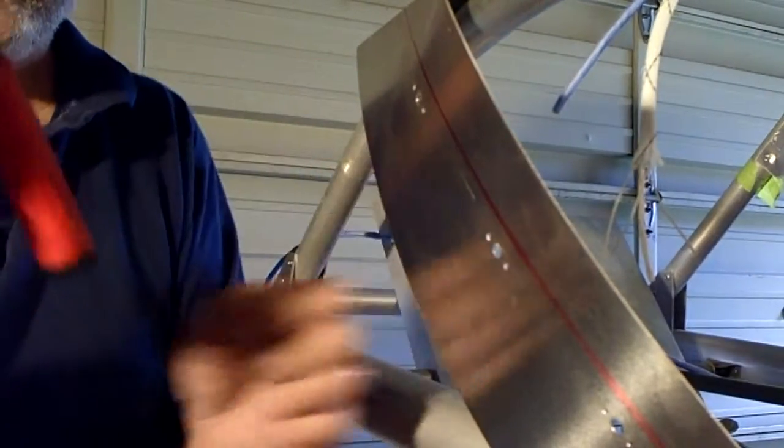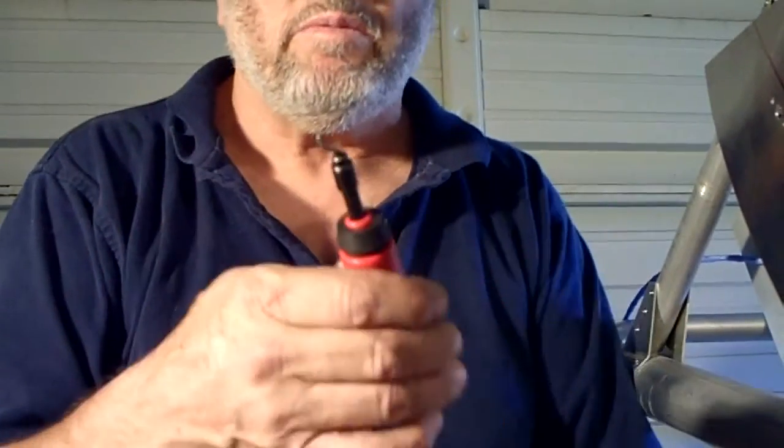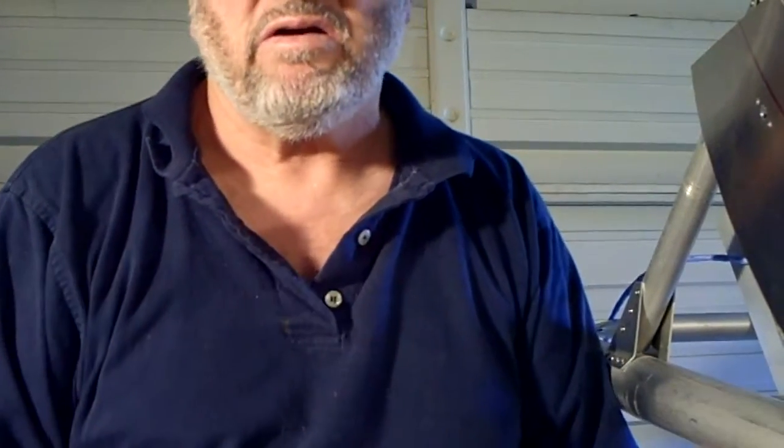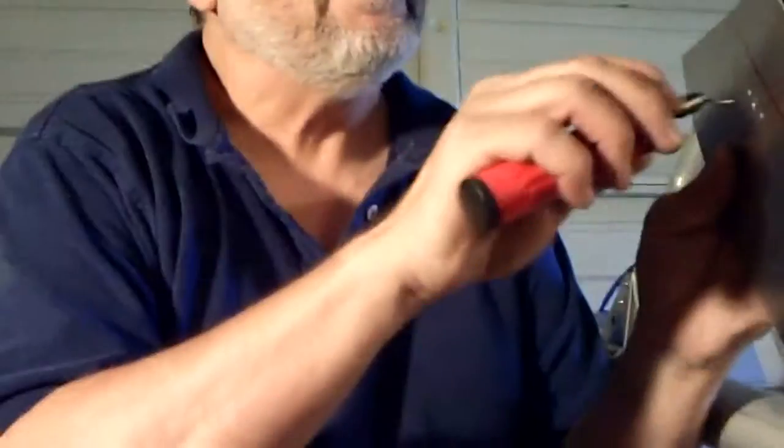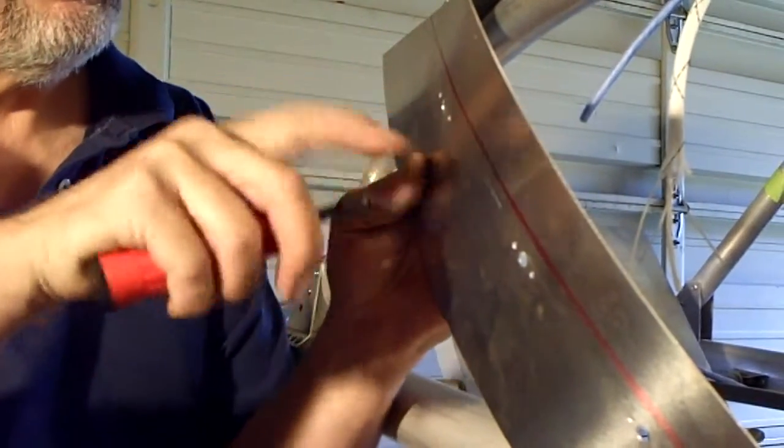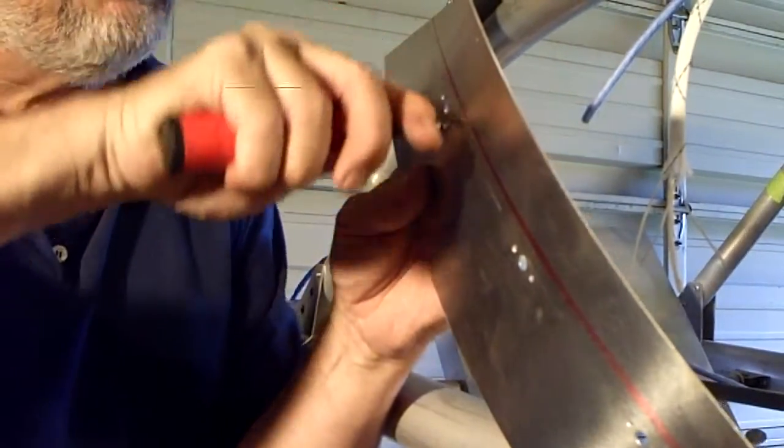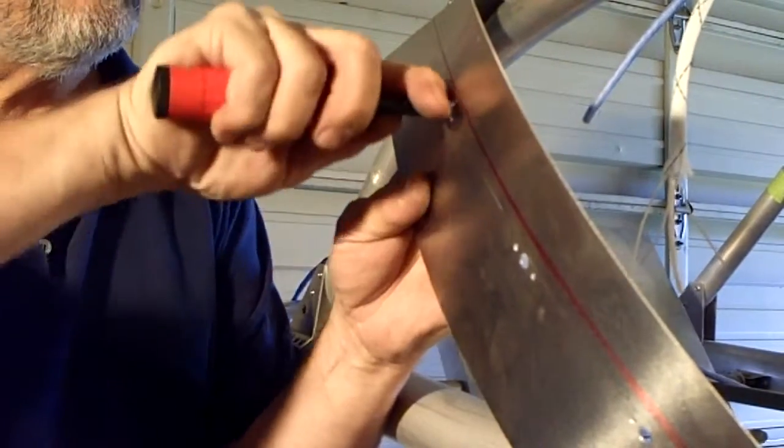Next step is to take your little deburring tool here. Again, you can buy this at almost any aircraft supply: The Yard, ATS tool supply, aircraft spruce, a number of them. This is a $10 or $15 tool. You just put it in there and you want to take and just deburr the edges of this hole.